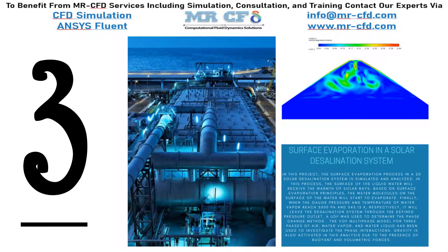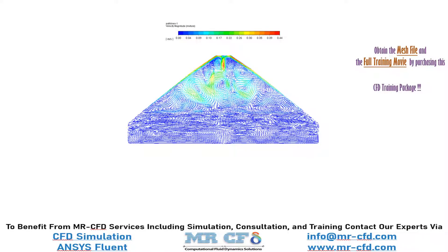In this project we will simulate surface evaporation in a solar desalination system. The surface evaporation process in a 2D solar desalination system is simulated and analyzed. The surface of the fluid water receives the warmth of solar rays, and based on the principles of surface evaporation, water molecules on the surface start to evaporate. When the gauge pressure and temperature of water vapor reach 3000 Pa and 343.15 Kelvin respectively, the system exits through the defined pressure outlet.